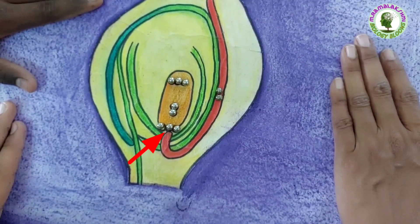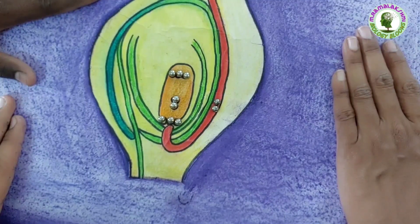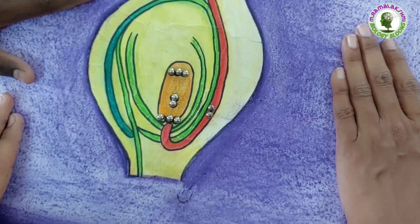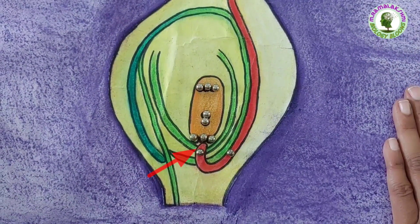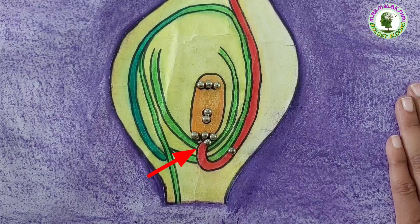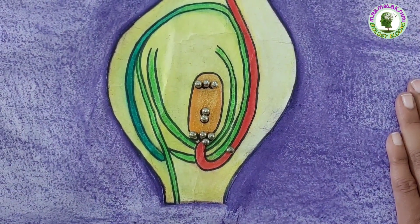The tip of the pollen tube enters into the embryo sac. Then the end of the pollen tube ruptures and releases 2 male nuclei into the embryo sac. One male nucleus fuses with the egg and forms a zygote. It is known as first fertilization.